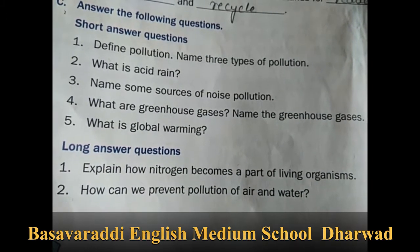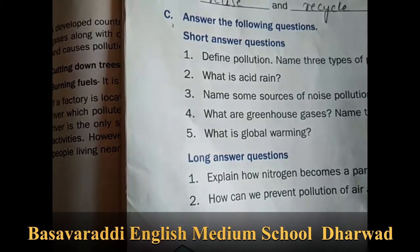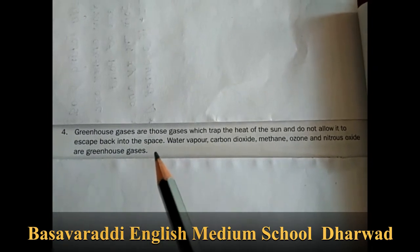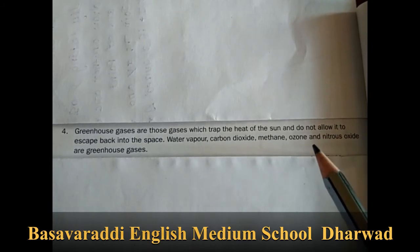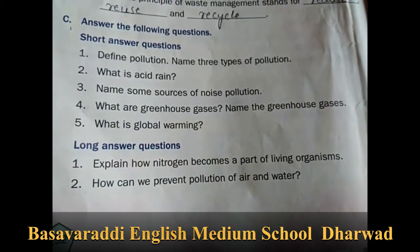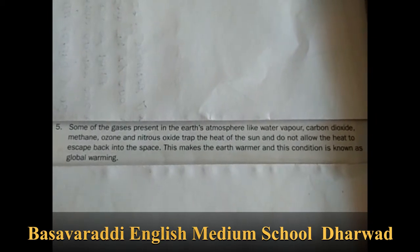Fourth question: what are greenhouse gases? Name the greenhouse gases. Answer: greenhouse gases are those gases which trap the heat of the sun and do not allow it to escape back into space. Water vapour, carbon dioxide, methane, ozone, and nitrous oxide are greenhouse gases. Fifth question: what is global warming? Answer: gases like water vapour, carbon dioxide, methane, ozone, and nitrous oxide trap the heat of the sun and do not allow it to escape into space, making the earth warmer — this condition is known as global warming.